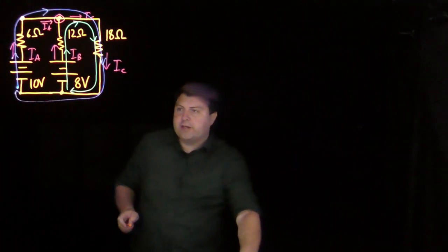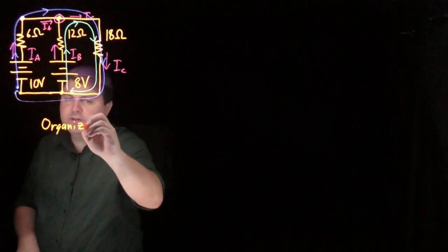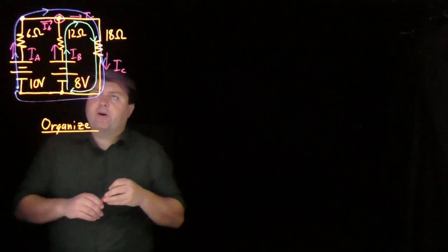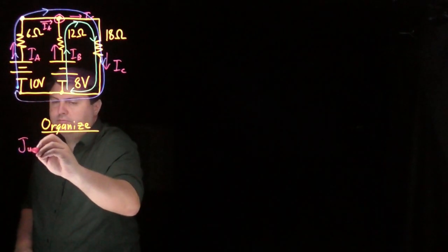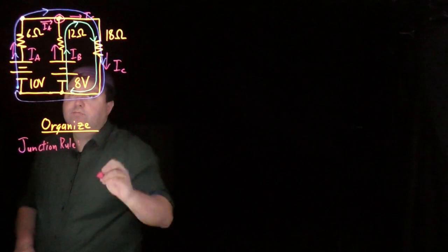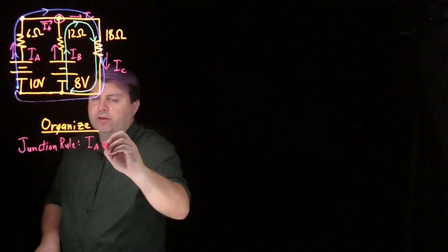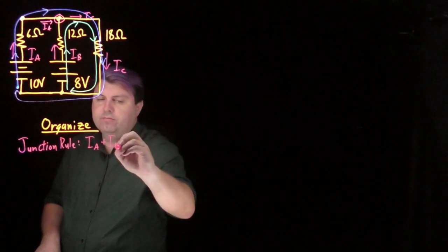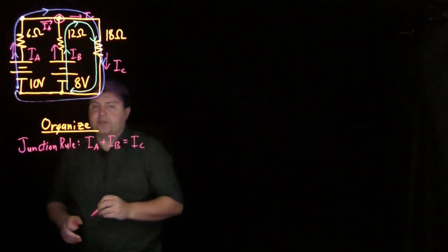So in my organized step, I'm going to write all of my junction and loop rules that I've just determined. From my junction rule, Ia and Ib, my two currents into the junction, is equal to Ic, the current coming out of the junction.